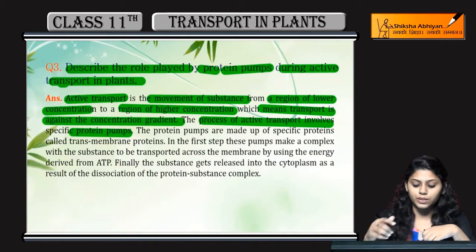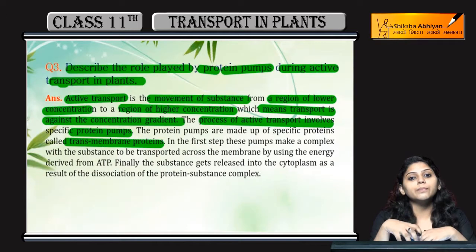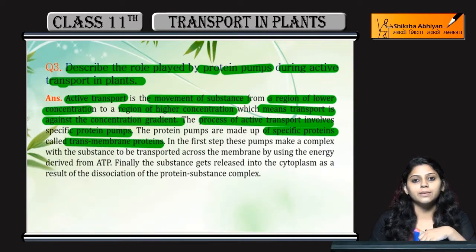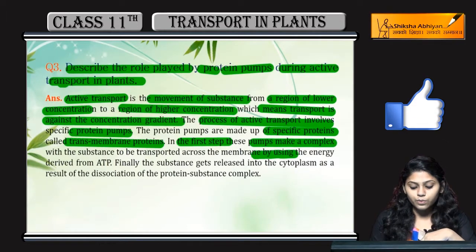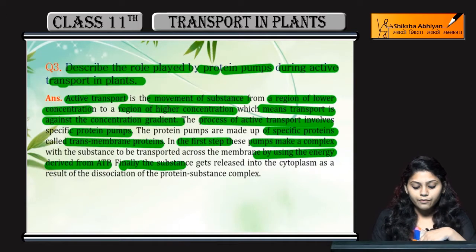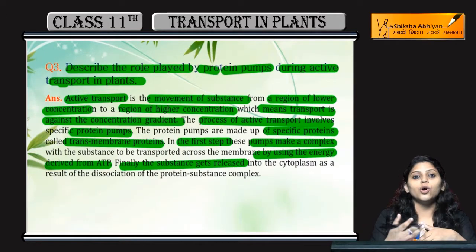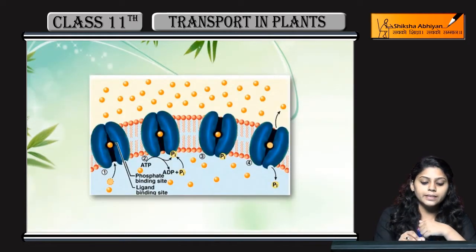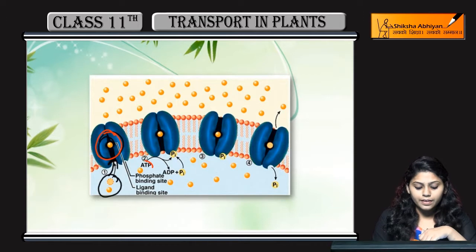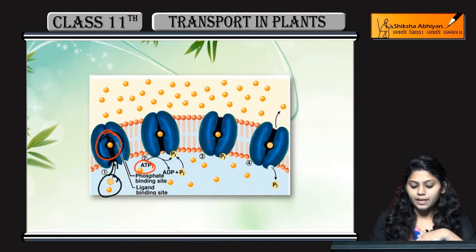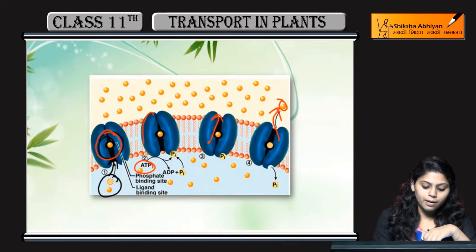Ye specific protein pumps hote hain, ye bane hote hain transmembrane proteins se. Ye series of steps mein apna function karte hain. Sabse pahle, ye pump complex banate hain us substance ke saath jise transfer karna hai doosari side. Phir energy ko use karte hain — ATP. Finally, substance ko release karte hain into the cytoplasm or the other side. Diagram ki help se dekhte hain: yahan pahle substance ne protein ke saath complex banaya, phir ATP energy currency ko use kiya taaki against the concentration gradient transfer ho.